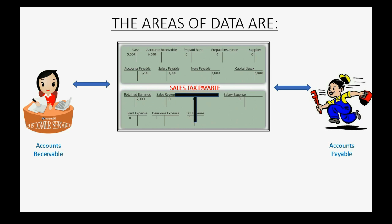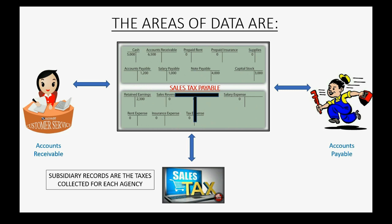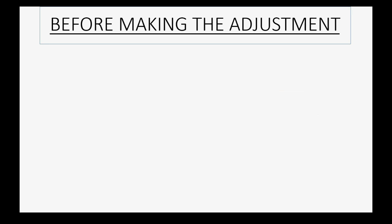Sales tax payable is another area of data that has to match a T-account in the chart of accounts. The subsidiary records in sales tax are the tax agencies and the money we owe to each individual tax agency, exactly on the day that we change accounting systems.